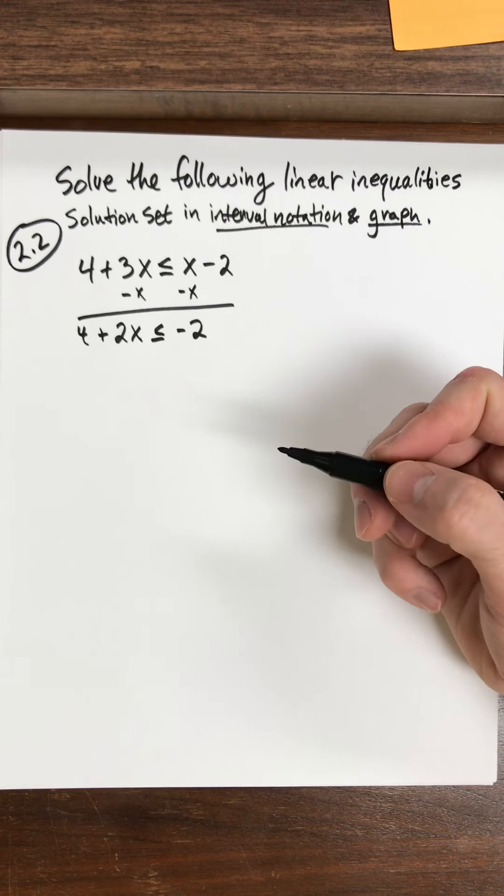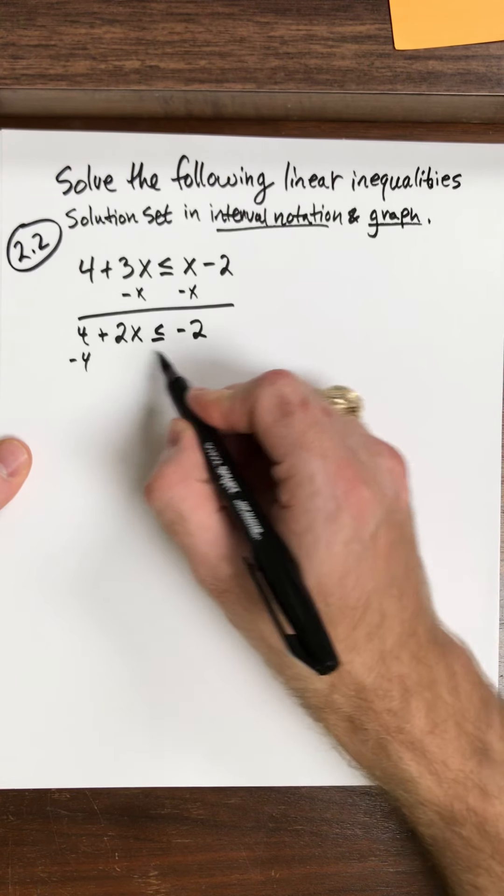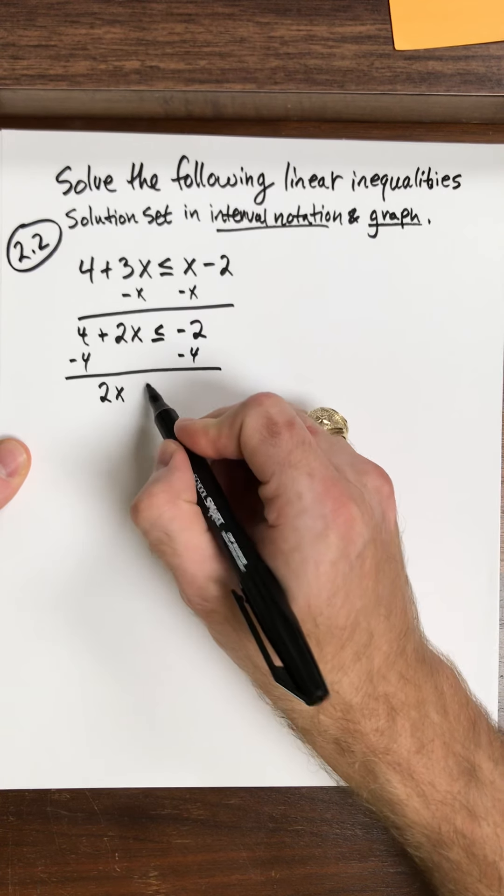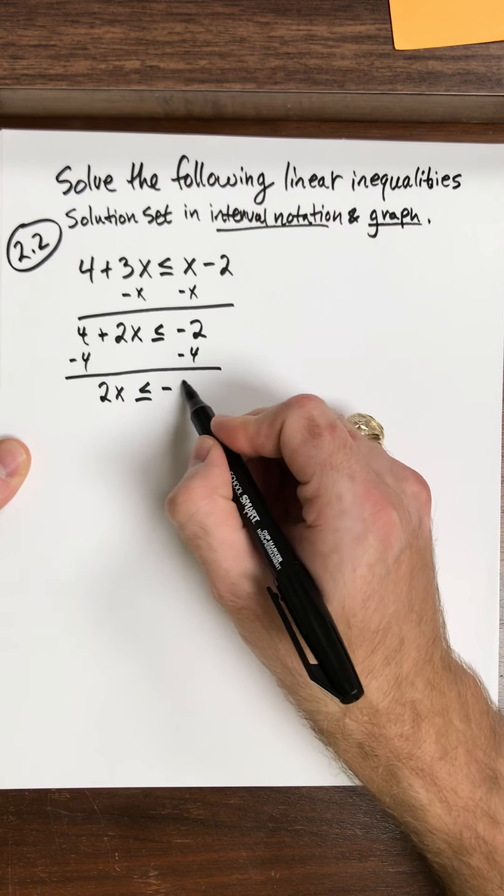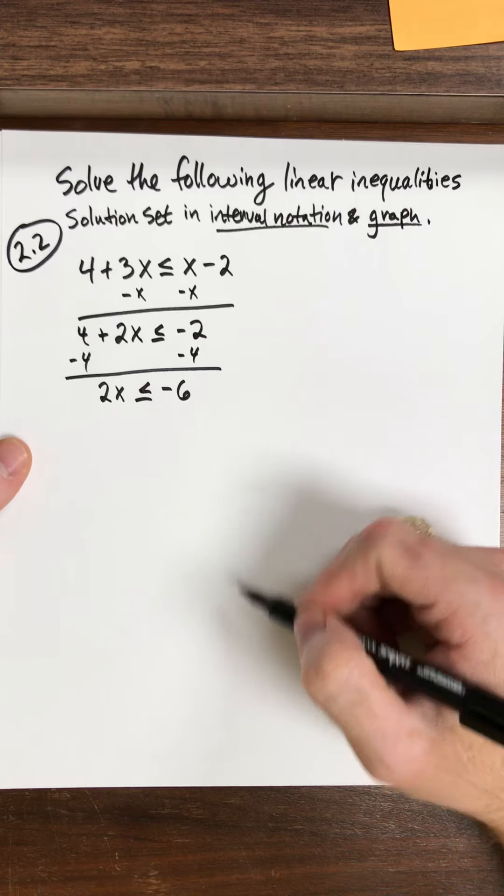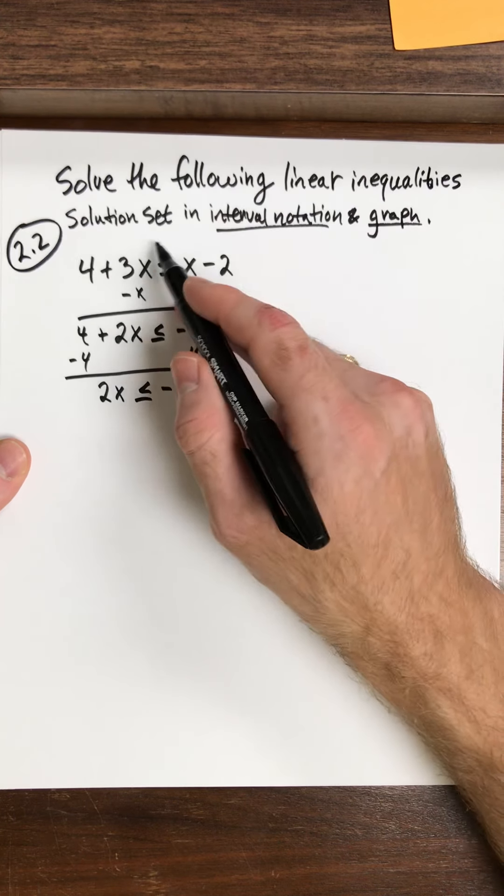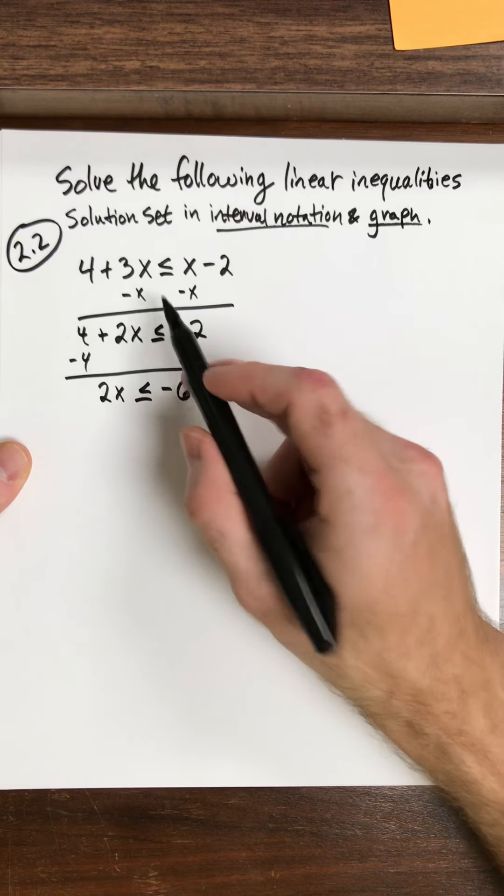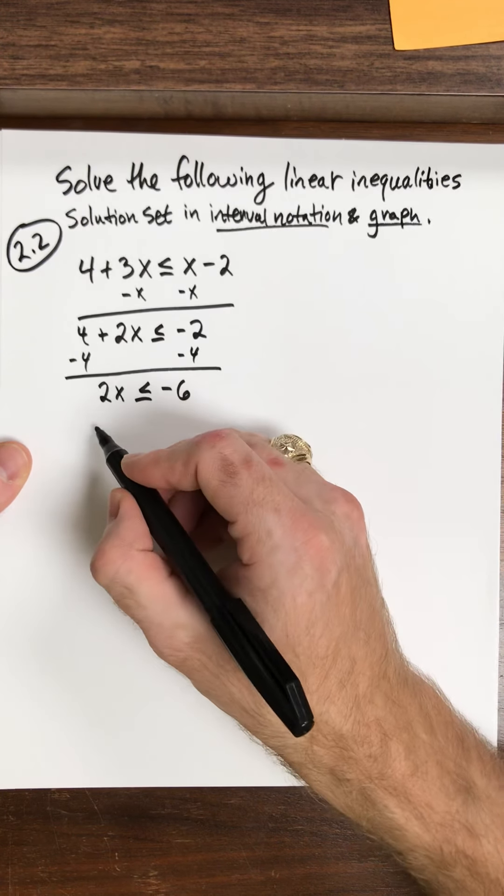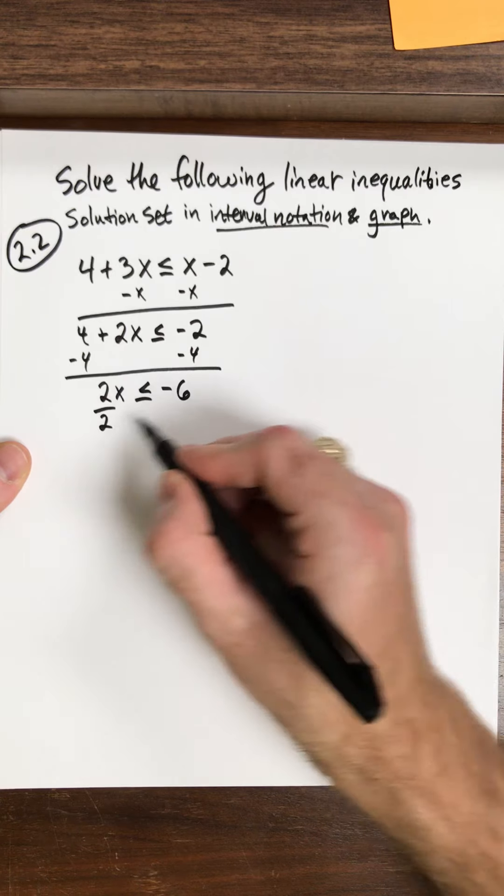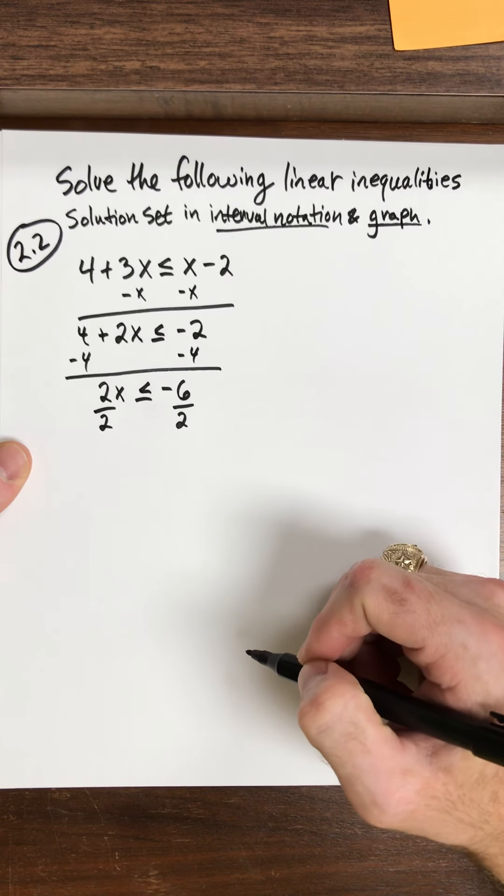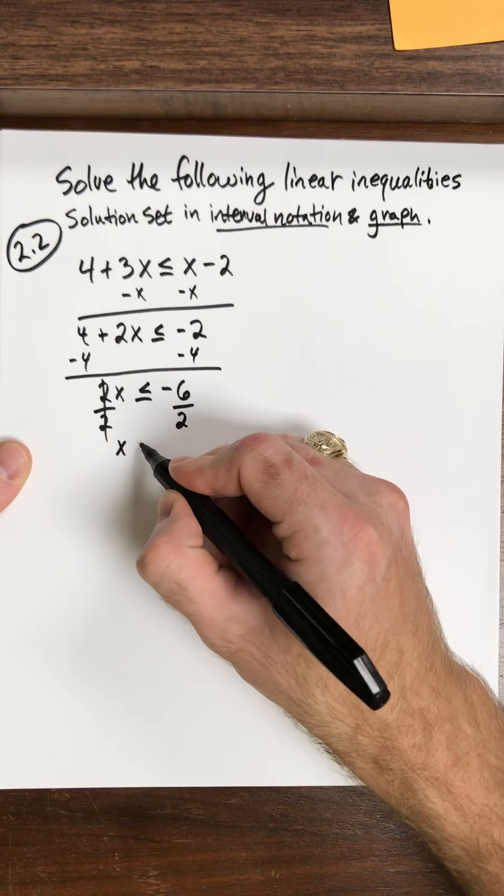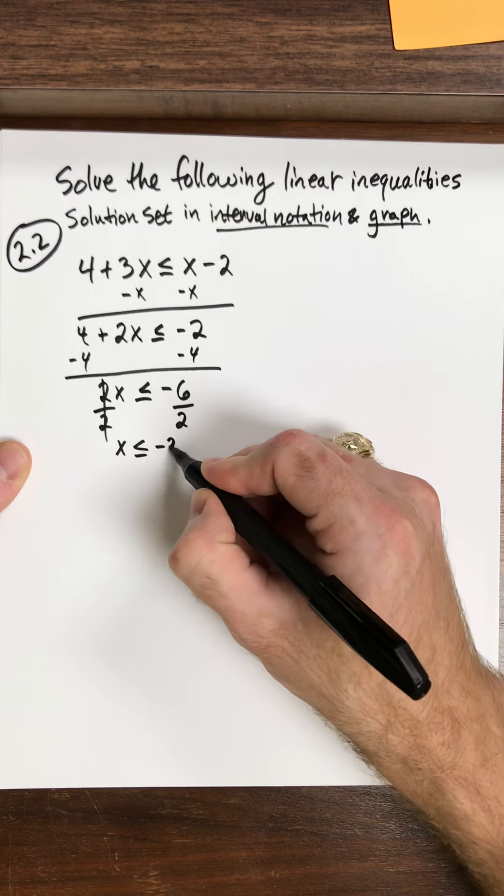Now to move my 4, I subtract 4 from both sides, 2x less than or equal to negative 6. All right, you know this works the same way as if it had been an equal sign here. The only thing that you might run into is if I'm dividing by a negative, but here I end up dividing by a positive 2, so I'm not going to flip the sign here on my inequality. So the 2s cancel and I get x is less than or equal to negative 3.